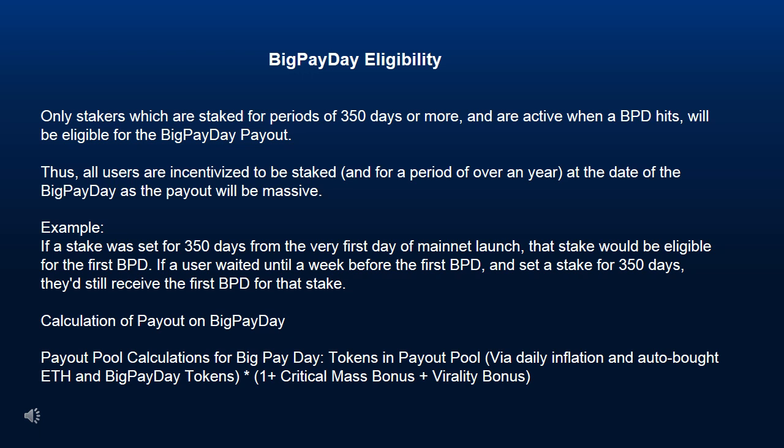Example: if a stake was set for 350 days from the very first day of mainnet launch, that stake would be eligible for the first BPD. If a user waited until a week before the first BPD and set a stake for 350 days, they'd still receive the first BPD for that stake. The payout pool calculation for Big Pay Day is: tokens in payout pool via daily inflation and auto-bought ETH, plus Big Pay Day tokens, multiplied by (1 + critical mass bonus + virality bonus).